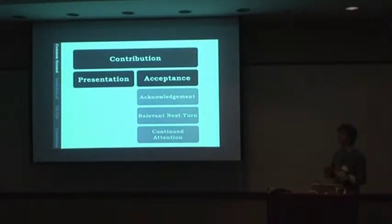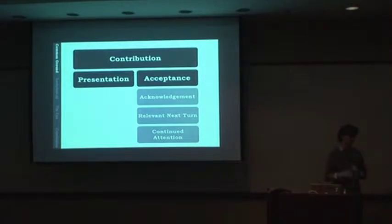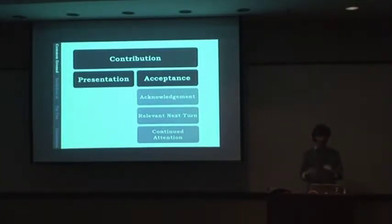Clark's real contribution was to lay out the ways that things can get accepted. He said there are three ways somebody can accept a presentation. The first is acknowledgement—just saying yeah, okay. If I say I'm going to lunch and you say all right, we're done. You've accepted my presentation, and that's a bit of knowledge we both share. Acknowledgements can also be nodding, uh-huhs, or other non-speech signals—something that says got it.